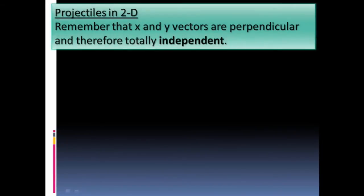The first thing I want to remind you of is this idea that in two dimensions, x and y vectors are perpendicular to each other and therefore totally independent. We covered this idea last lesson dealing with a boat going across the river — any horizontal motion that occurs is independent of the vertical motion. That is absolutely true in projectiles when dealing in two dimensions. If you know a little bit of trig and the Pythagorean theorem, you're going to be good to go.